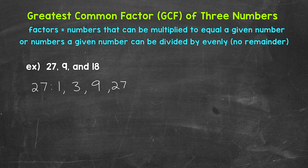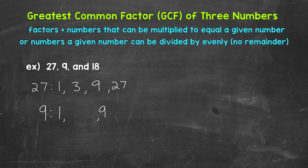One thing I do want to mention about factors and writing out factor lists is that you will get a lot better the more you do — everything from writing and recognizing factors to the spacing of your lists. Let's move on to the factors of 9. We can start with 1 and 9. We need to think of other factors of 9 — well, 3 times 3 equals 9, so 3 is a factor of 9. And although 3 times 3 equals 9, we just need to put 3 once in the list of factors.